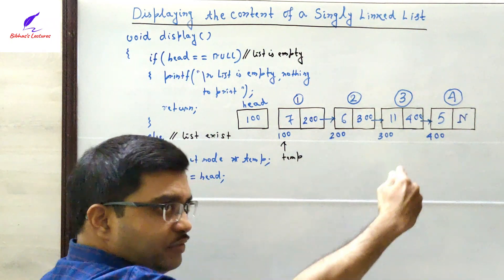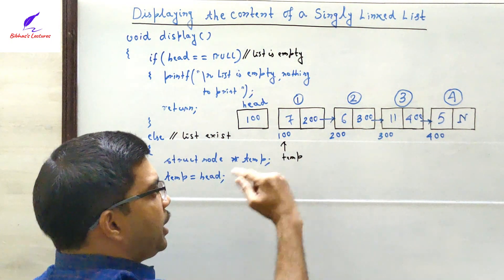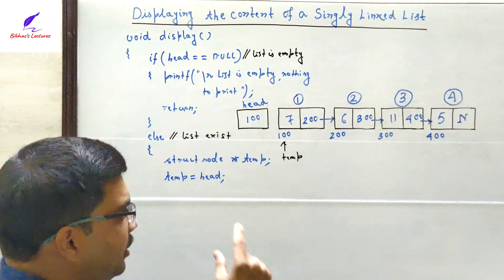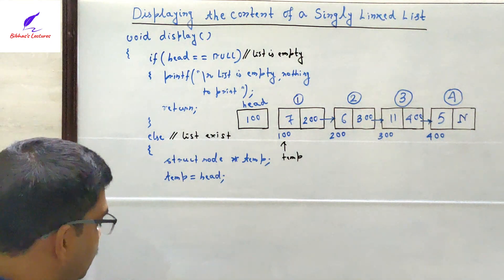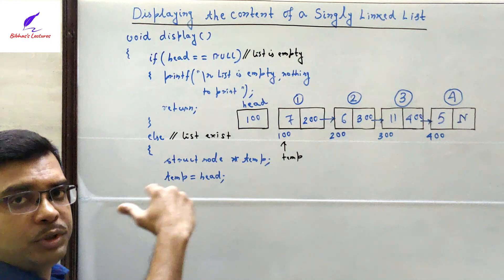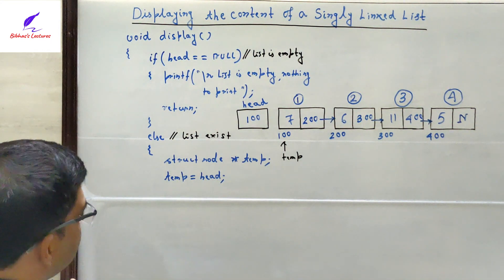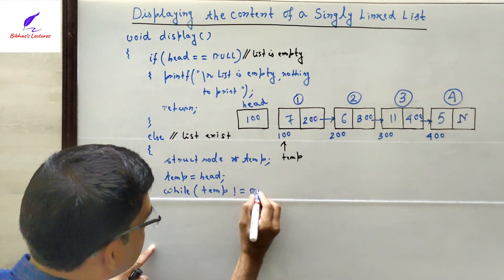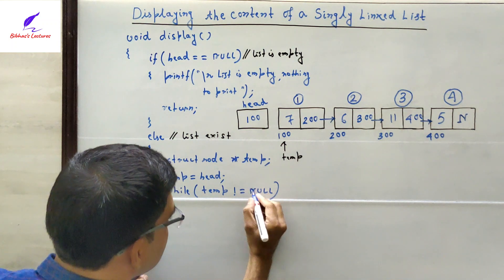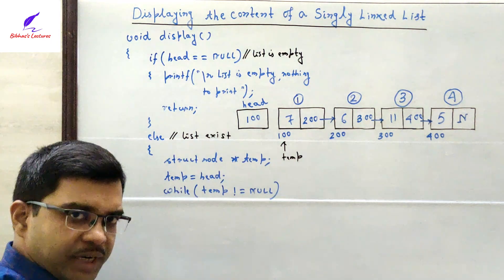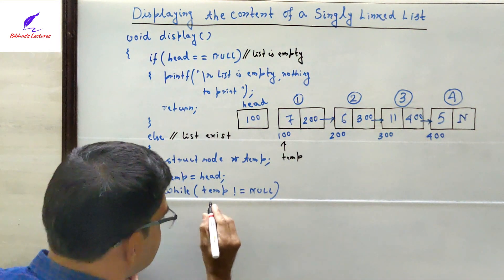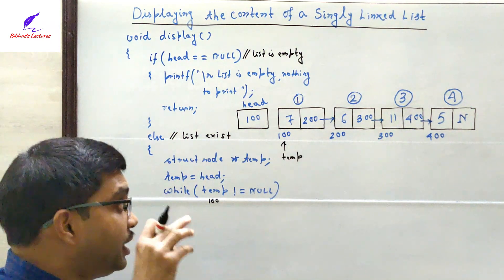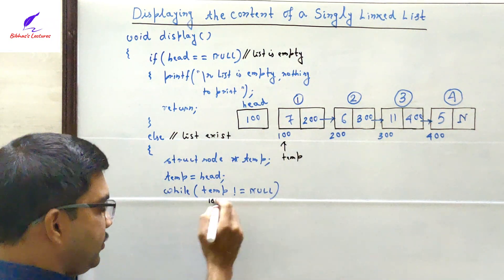From the first node to the last, we must visit each and every node — traversing the entire list — and print the data part of each valid node. Since we have many nodes to visit, we use a while loop. The condition is: while (temp != null). Right now temp contains 100, which is not equal to null, so the condition is true and temp is pointing to a valid node.